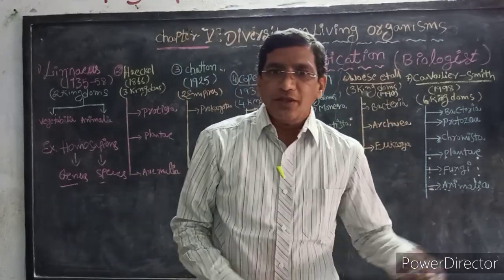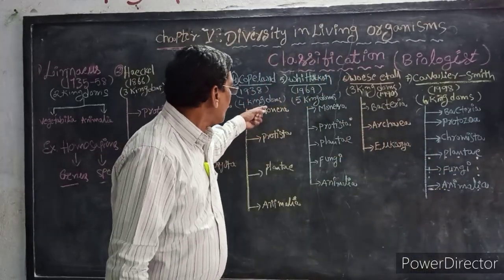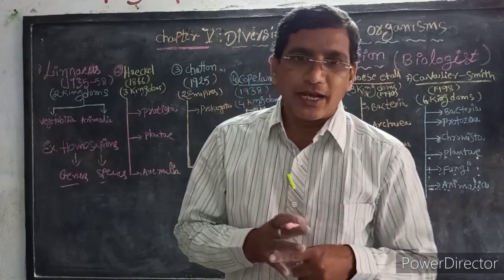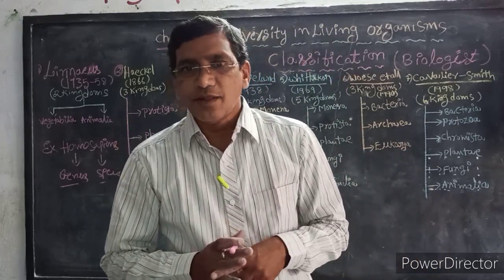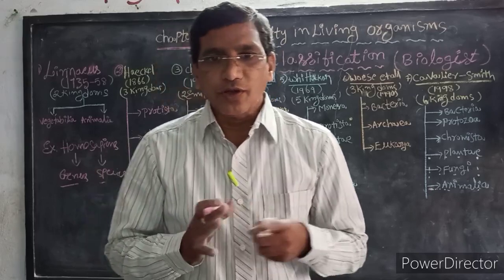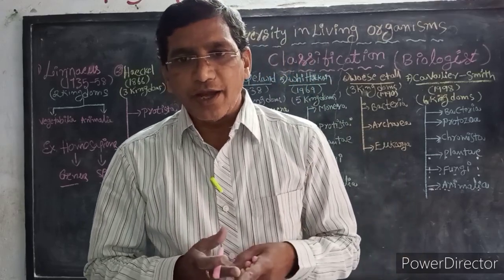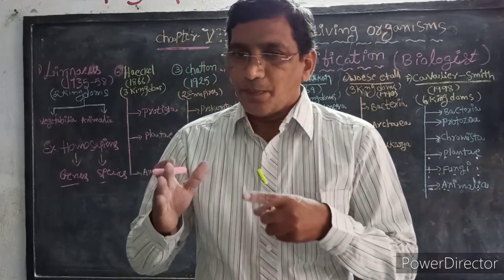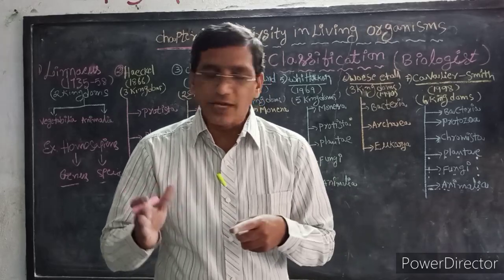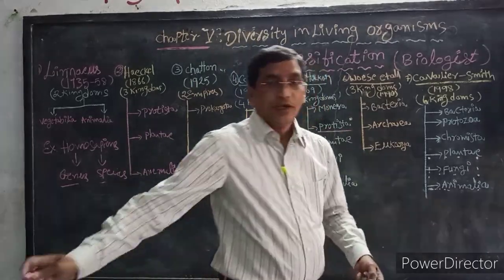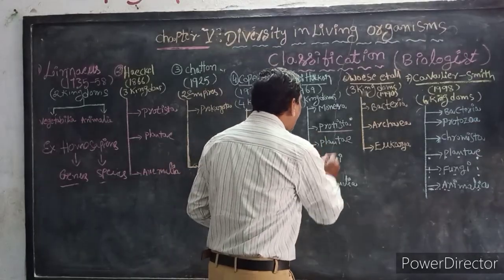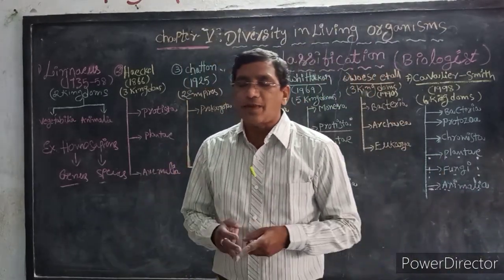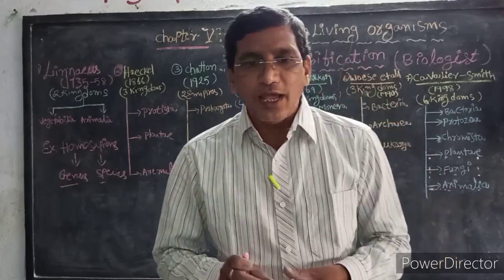In Whittaker's classification, he proposed five kingdoms: Monera, Protista, Plantae, Fungi, and Animalia. An important aspect of Whittaker's classification is that he specifies whether organisms possess a true nucleus or not — that means prokaryote and eukaryote. He placed eukaryotic unicellular organisms into the kingdom Protista. The remaining kingdoms — Plantae, Fungi, and Animalia — are classified based on their mode of obtaining food.